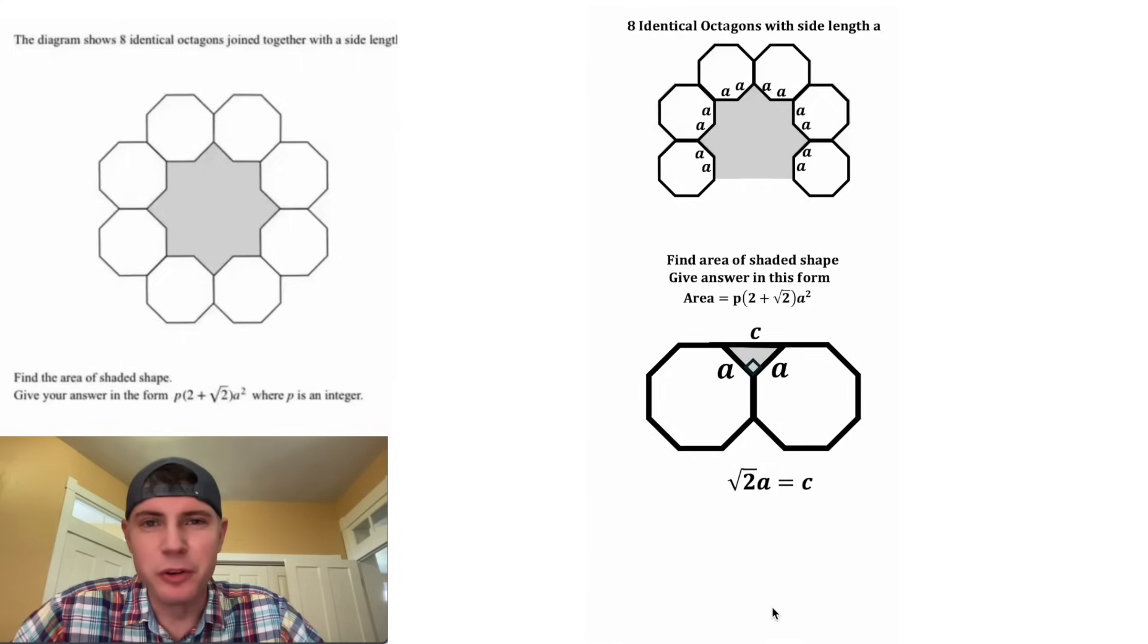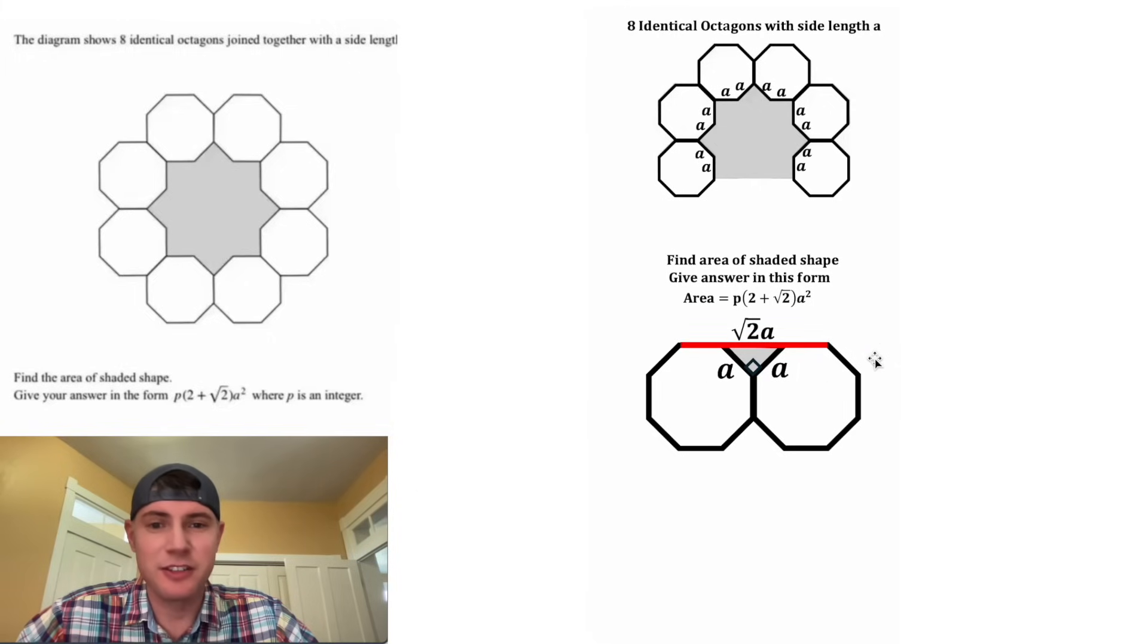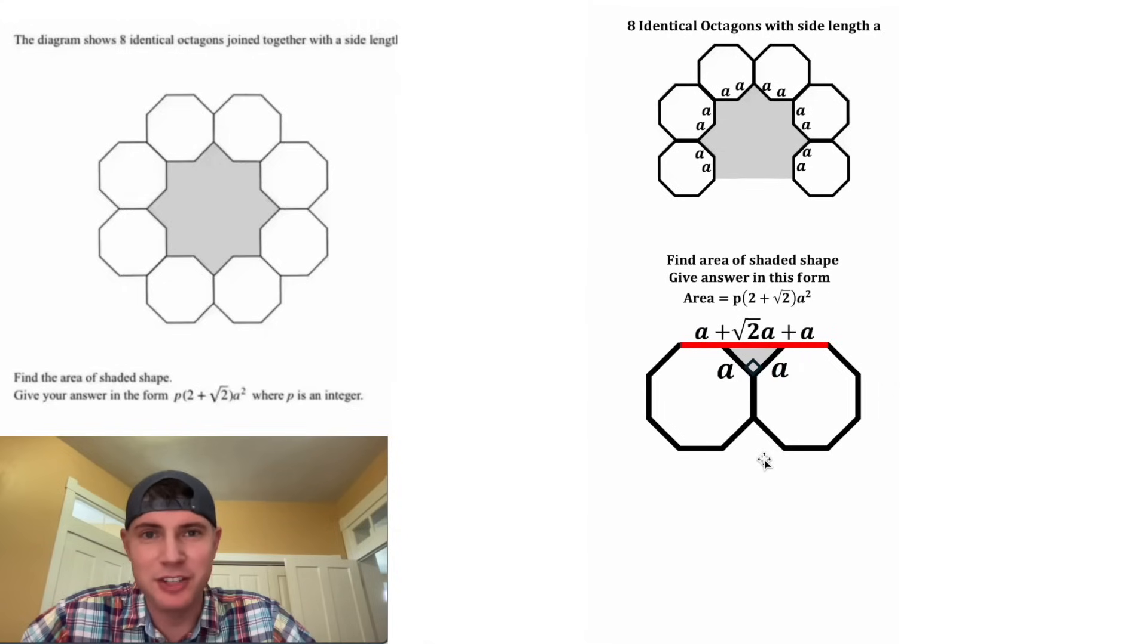And now we have C is equal to the square root of 2 times A. And we can update this to be square root of 2 times A. Now let's find this entire distance. We know these are both A, so we know the whole distance will be A plus the square root of 2 times A plus A.